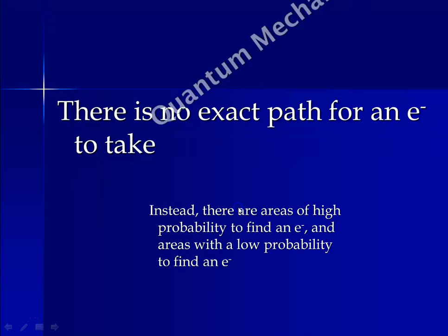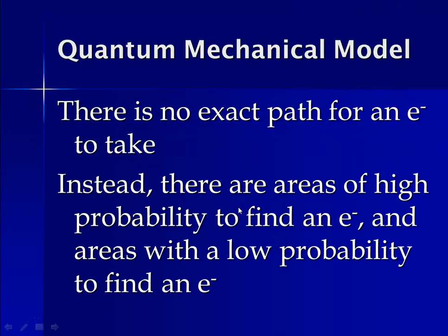It's also important to note that there is no exact path that an electron takes. Instead, in the quantum mechanical model, we talk about areas of high probability of finding an electron and areas with a low probability of finding an electron. We don't know its exact location because it has a mass of zero and it's moving pretty darn fast. So we talk about areas of high probability and low probability of finding an electron in space.